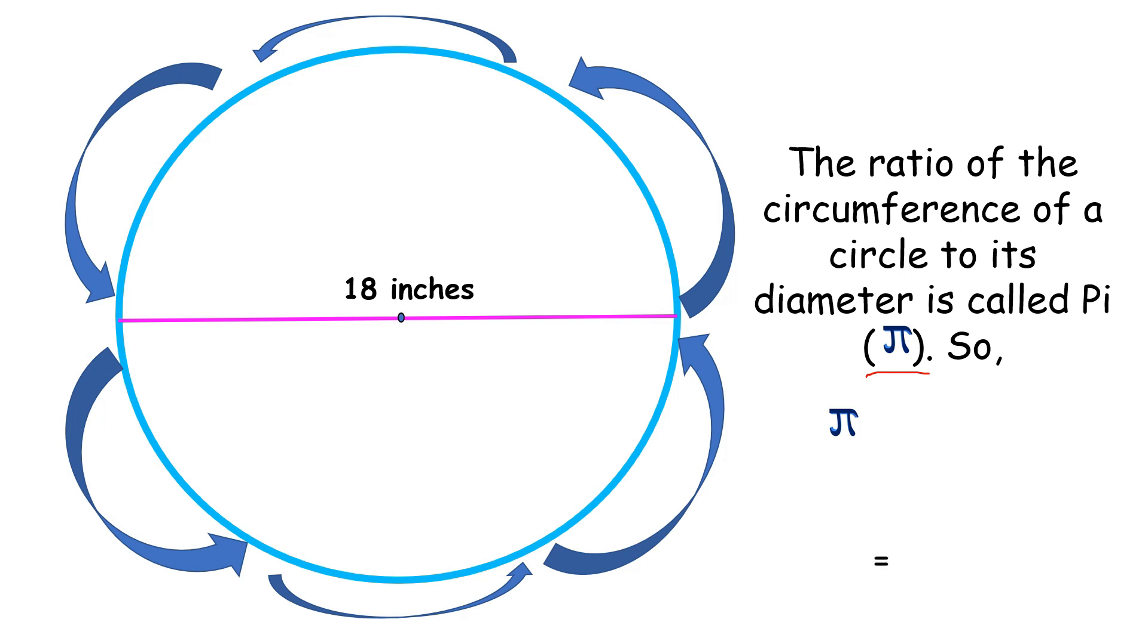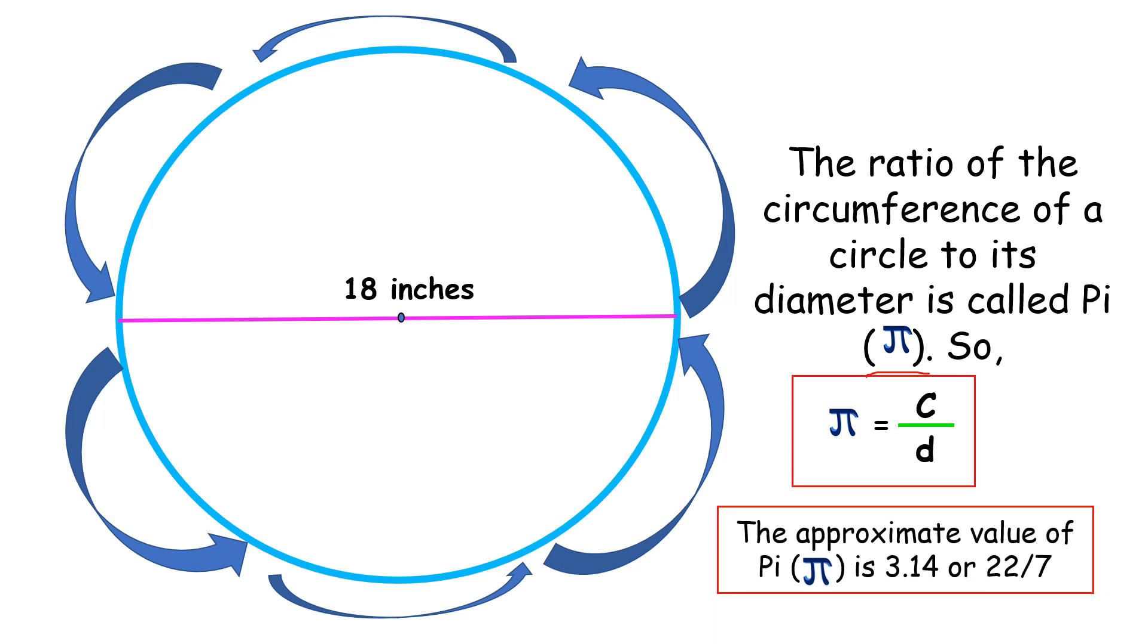Pi is equal to circumference divided by diameter. The approximate value of pi is 3.14 or 22 over 7.